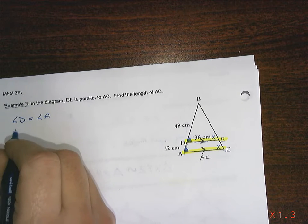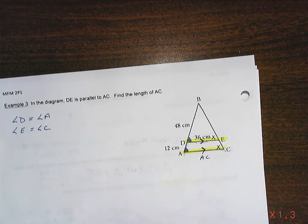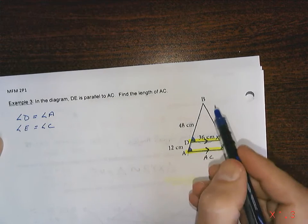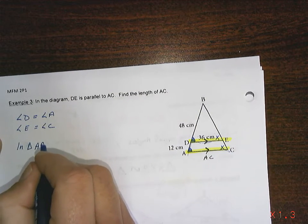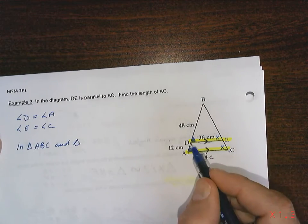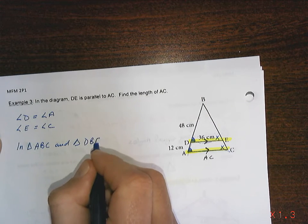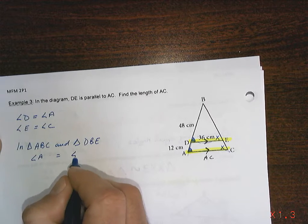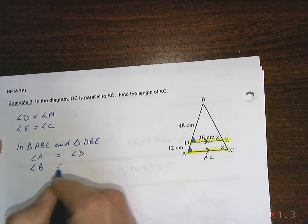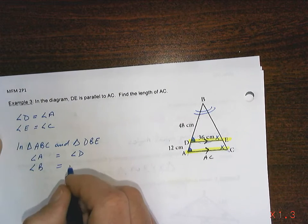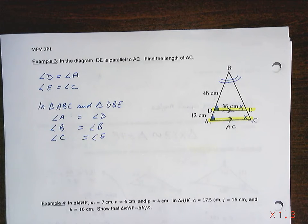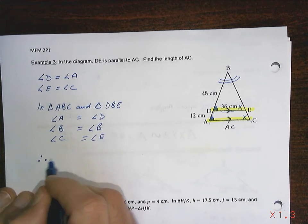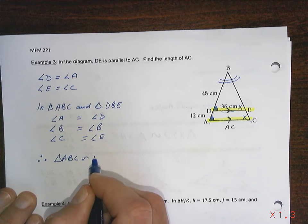What we know is angle E equals angle C. So if I take a look at this triangle that I have in triangle ABC, the big triangle, and the little triangle DBE, I know that angle A equals angle D. I know that angle B, they both share the same angle for angle B. And I know that angle C equals angle E. What that means is all three corresponding angles are equal. That's the very definition of similar triangles.